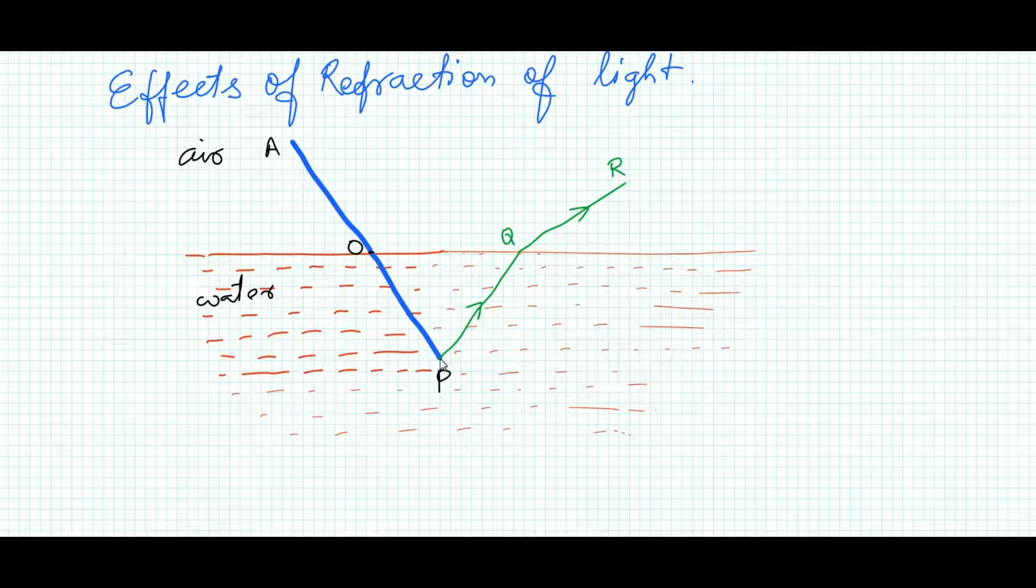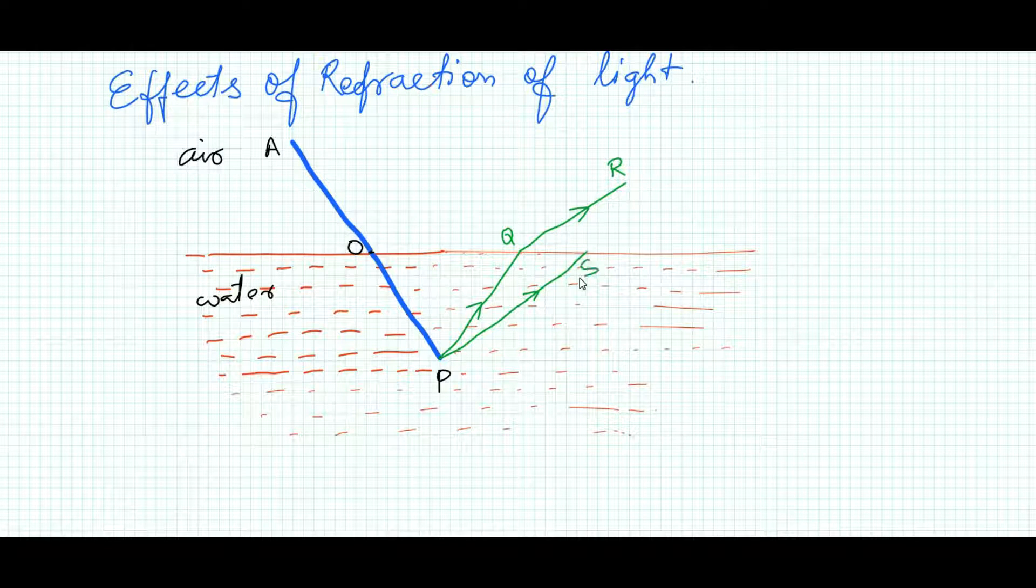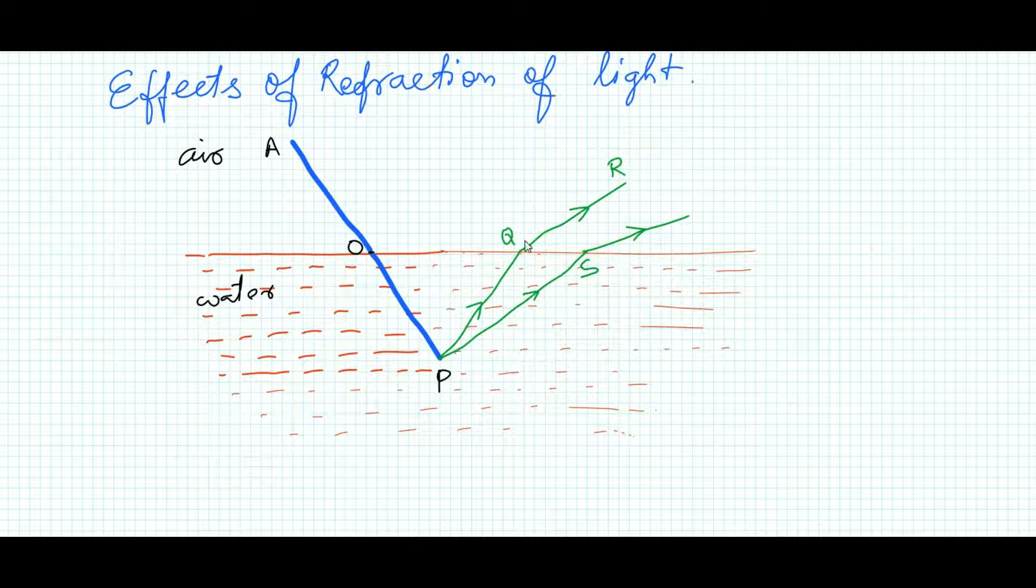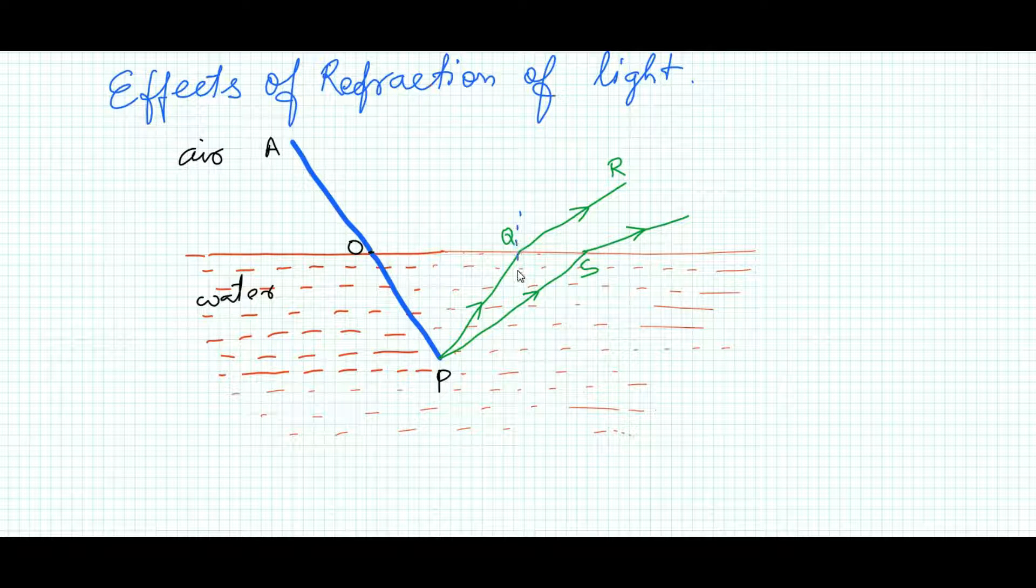Another ray of light which emanates from the tip—suppose PS—again it refracts away from the normal. In both these cases, this is the normal.